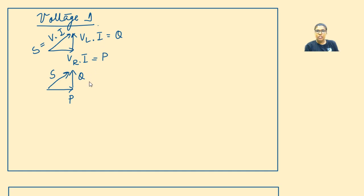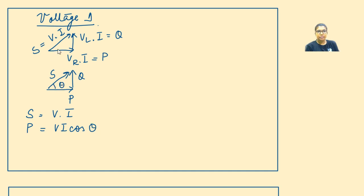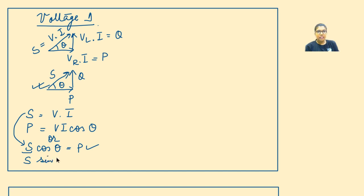Drawing an analogy between the two triangles, the basic formulas we can derive are: apparent power S equals V times I, that is V_RMS times I_RMS. Active power P equals V·I·cos φ, which is S·cos θ. Similarly, reactive power Q equals S·sin θ, which equals V·I·sin θ.